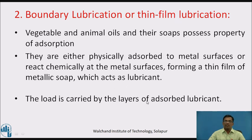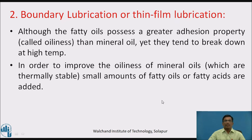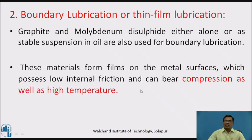The load is carried by the layers of adsorbed lubricant. Although fatty oils possess a greater adhesion property called oiliness than mineral oils, they tend to break down at high temperature. In order to improve the oiliness of mineral oils, small amounts of fatty oils or fatty acids are added. Graphite or molybdenum disulfide, either alone or as a stable suspension in oil, are also used for boundary lubrication. These materials form a film on the metal surfaces which possesses low internal friction and can bear pressure, compression, as well as high temperature.